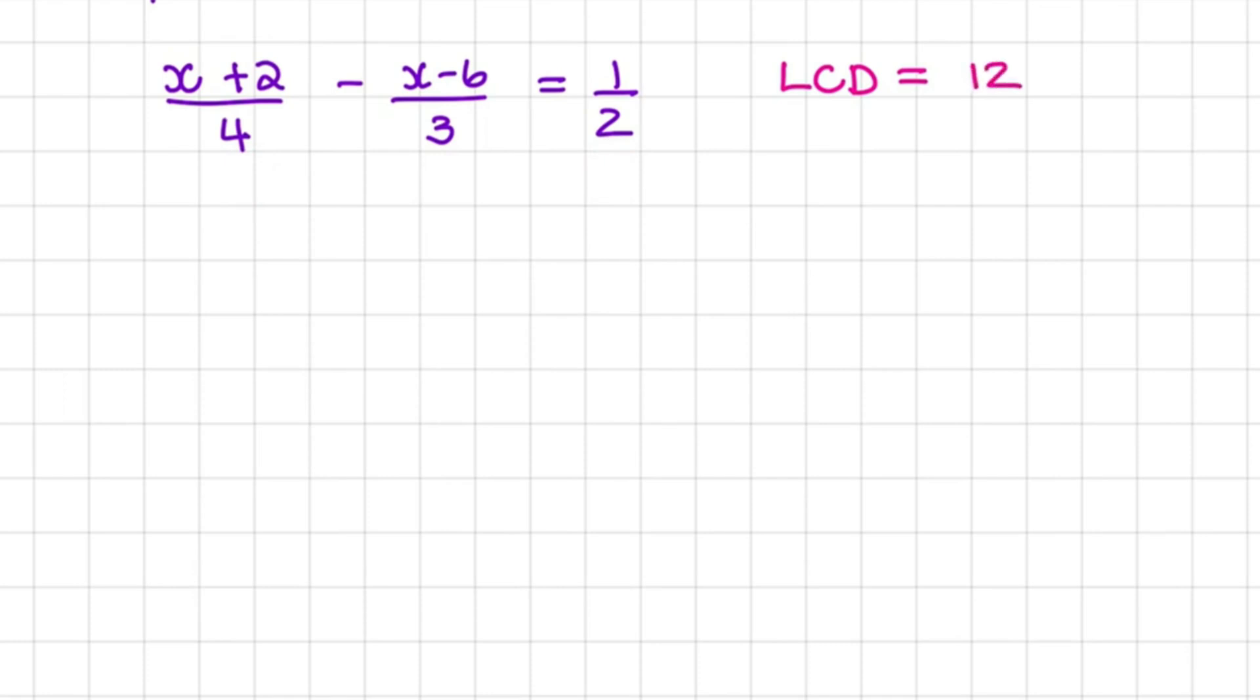So now that we have the LCD, we can multiply everywhere with the LCD. So the first term I'll multiply with 12, the second term I'll multiply with 12, and the third term or the right hand side I'll multiply with 12.